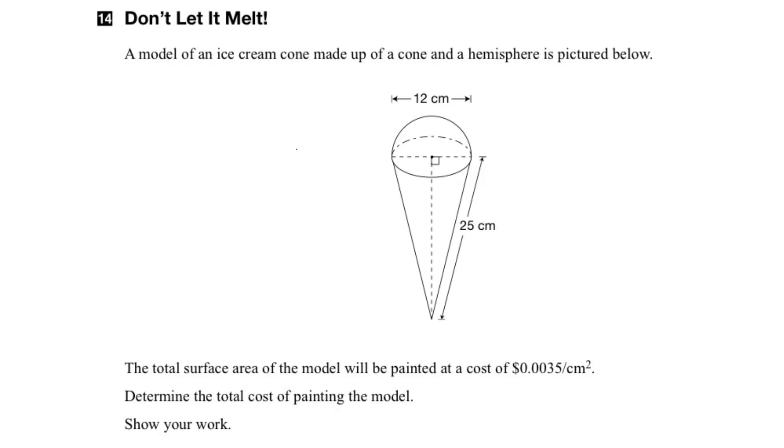And what we have to do is figure out the total cost of painting the entire outside. So all of this part here and all of this part here. And the question tells us the cost is going to be 0.0035 dollars per centimeter squared. So as soon as we see something centimeter squared we know that we are talking about area.